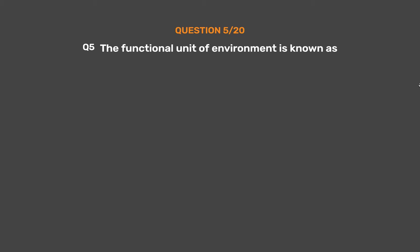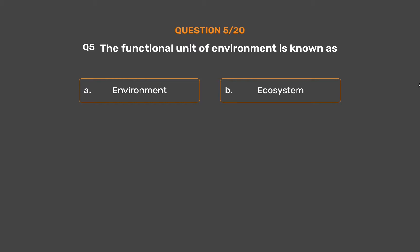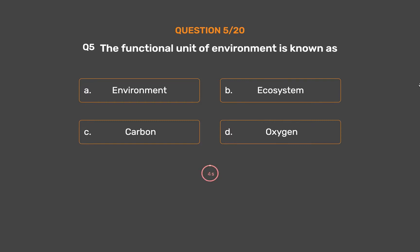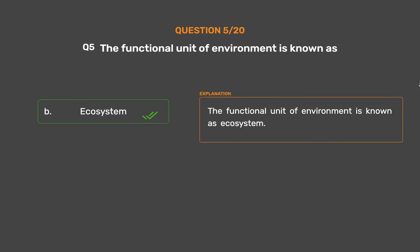Question number 5: The functional unit of environment is known as — Option A: Environment, Option B: Ecosystem, Option C: Carbon, Option D: Oxygen. The correct answer is Option B. The functional unit of environment is known as Ecosystem.